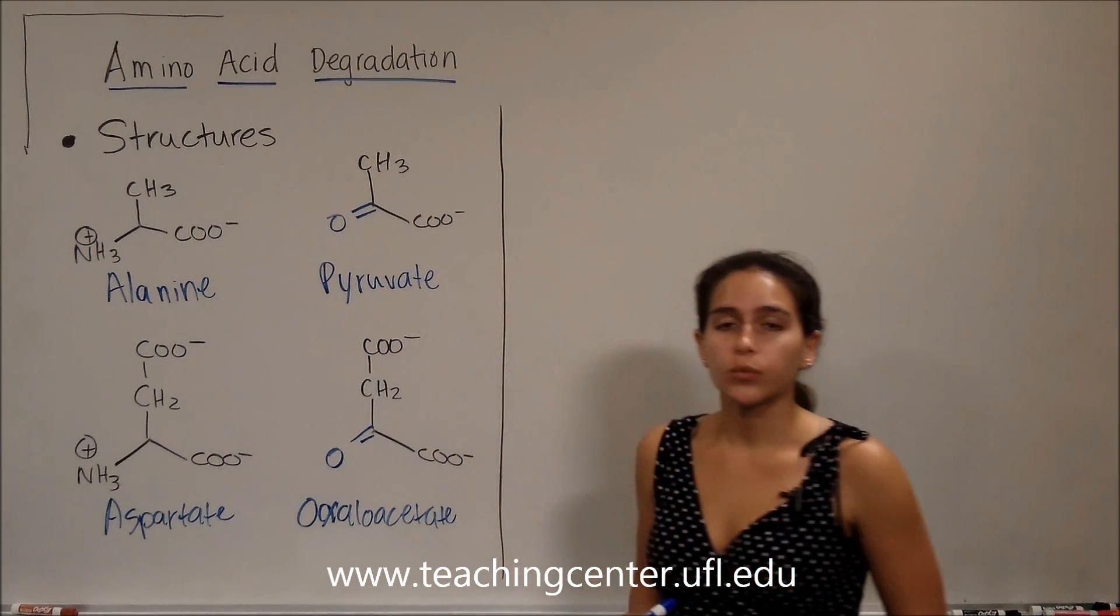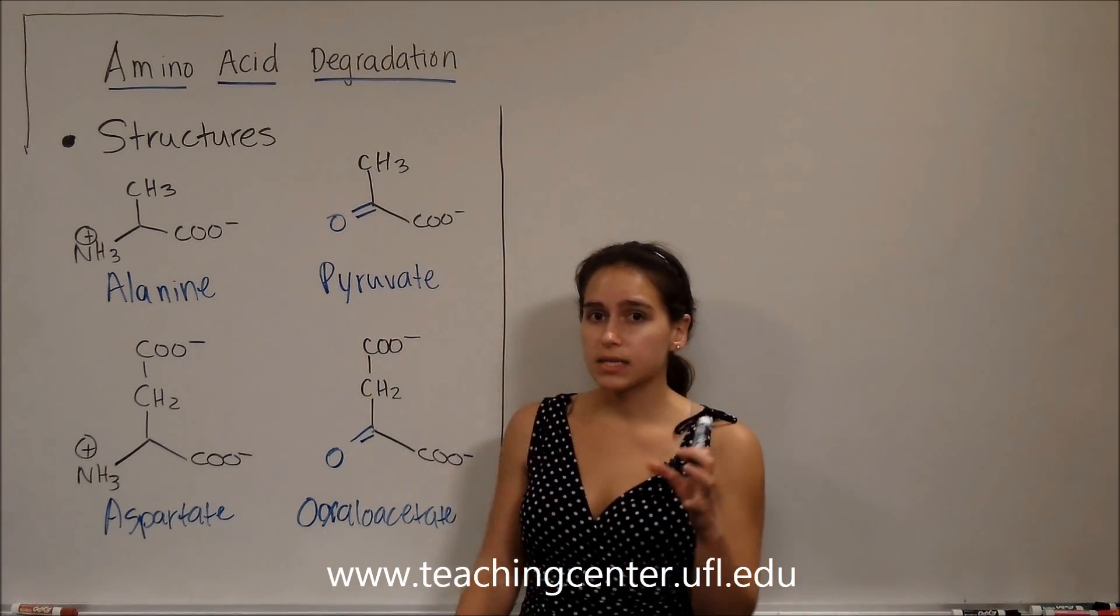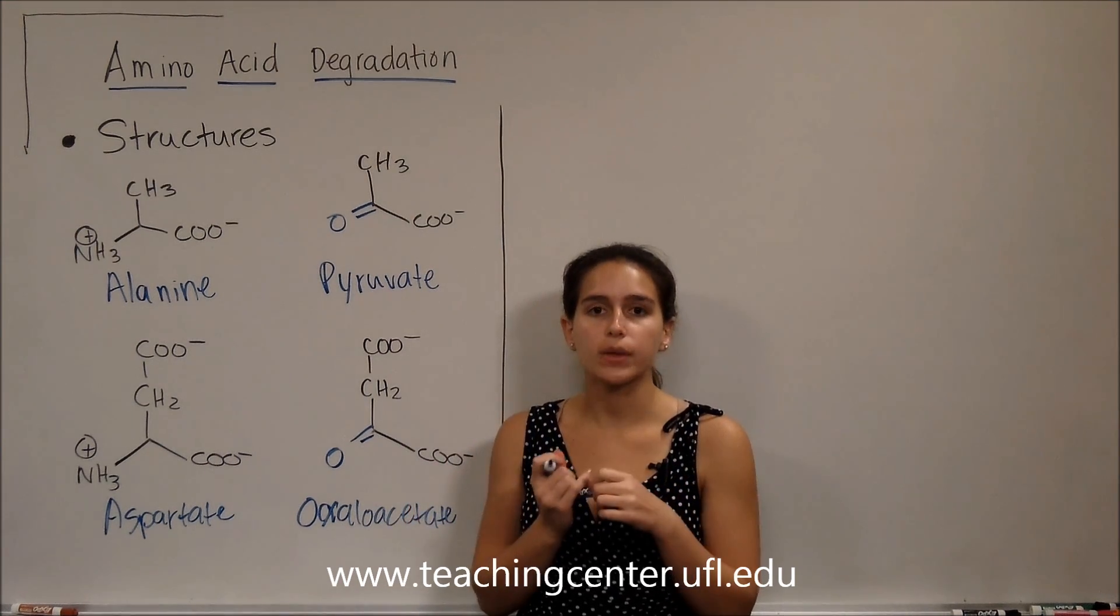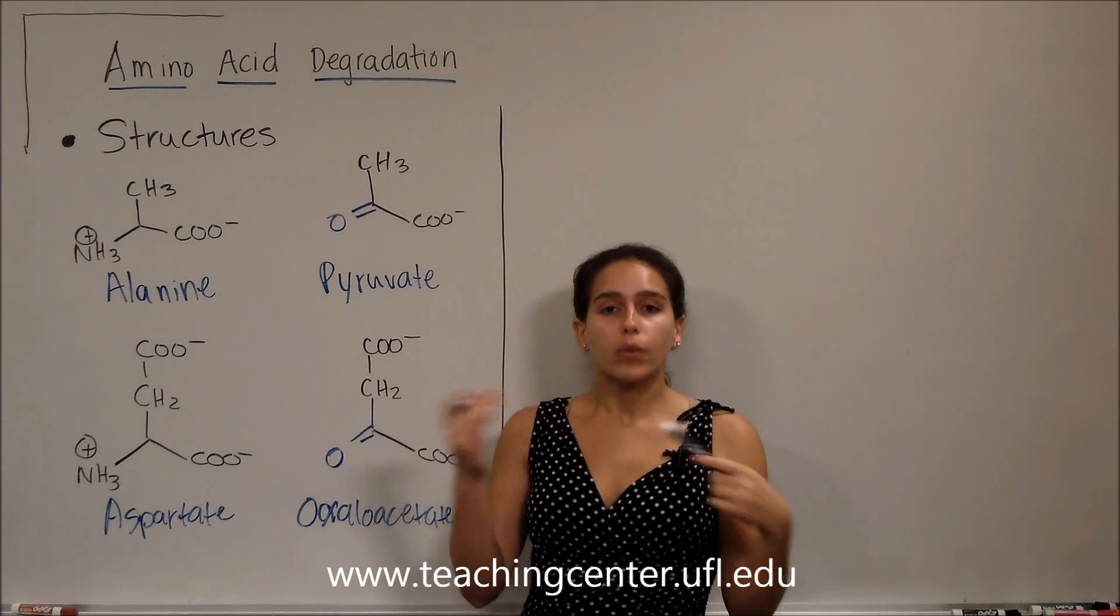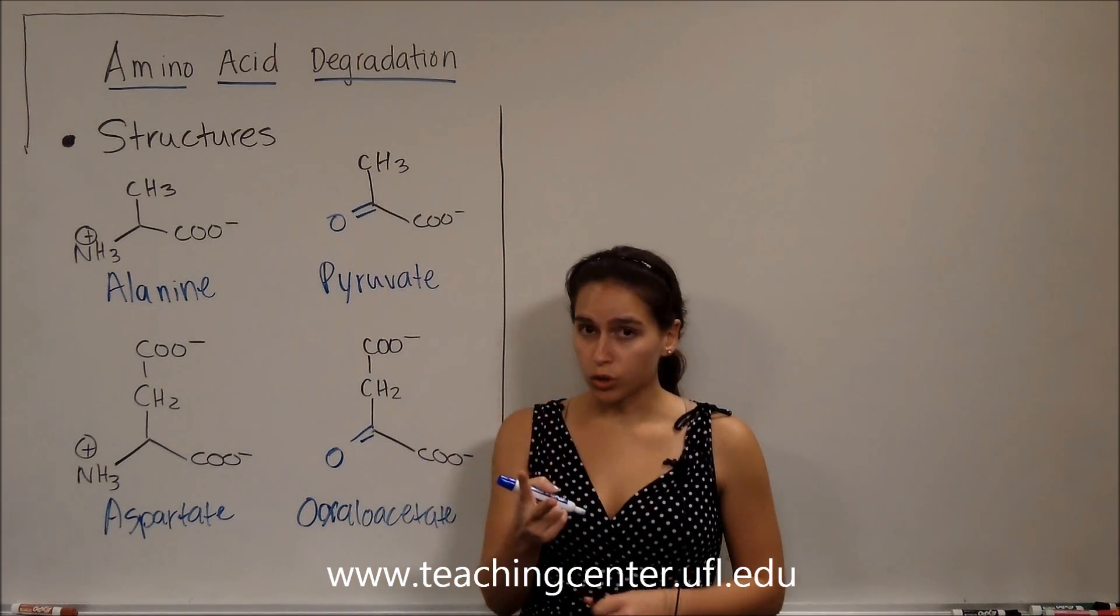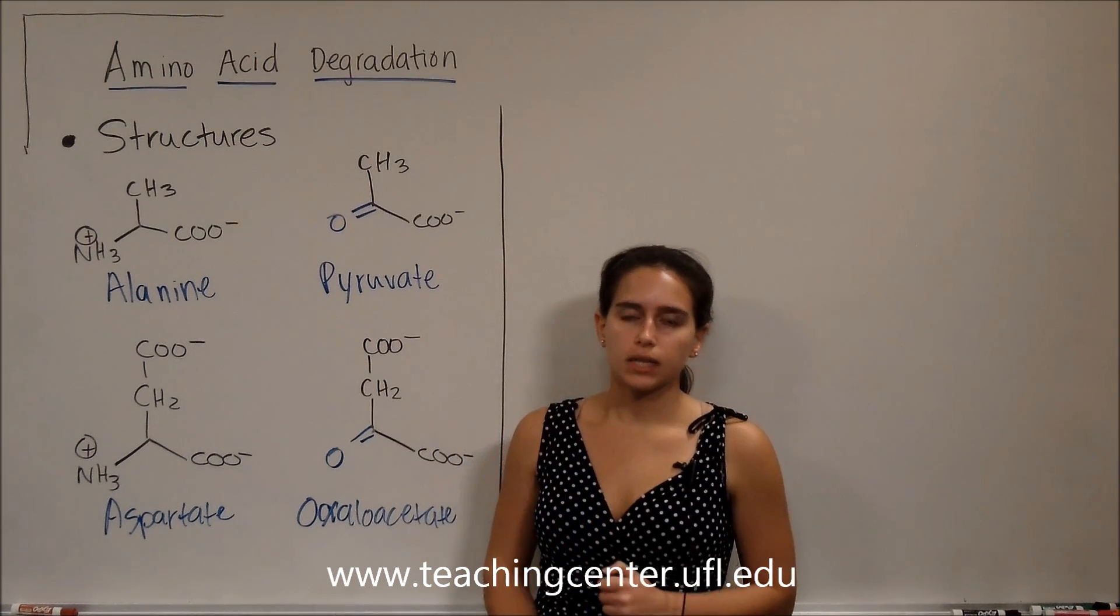Remember that when we add oxaloacetate and acetyl-CoA together, acetyl-CoA having two carbons, we get citrate, which has six carbons. Through the TCA cycle, we lose two CO2s, or two carbons, and again we make oxaloacetate.